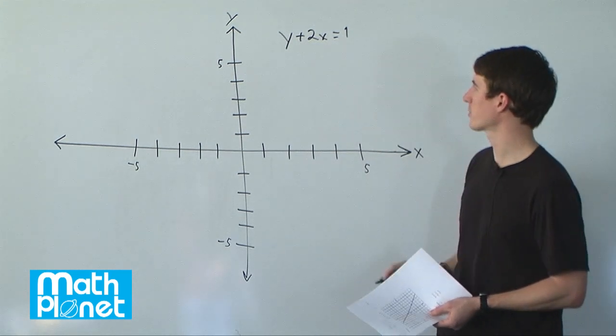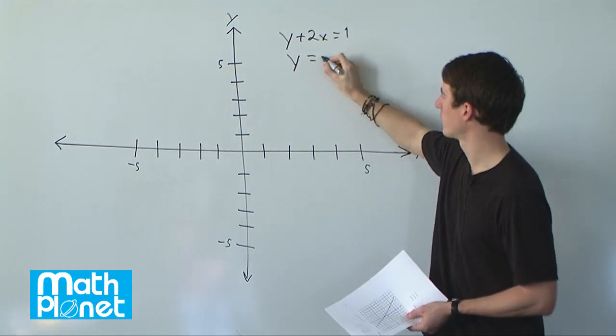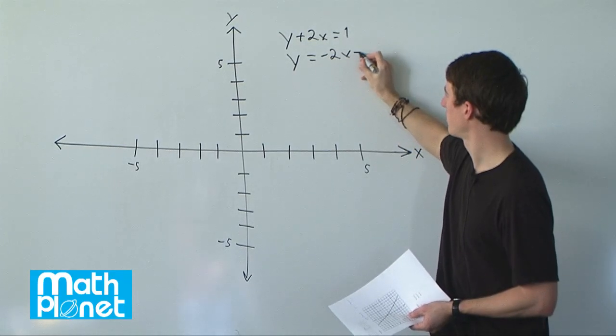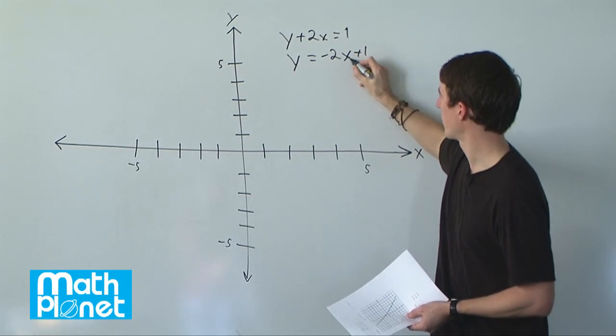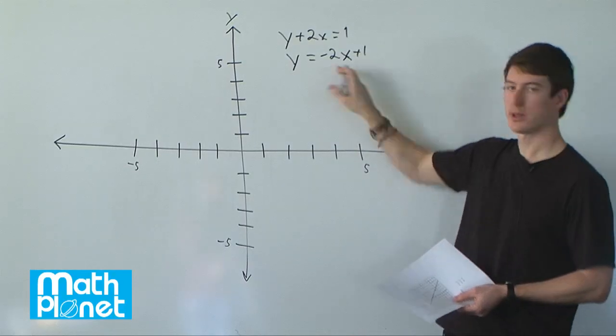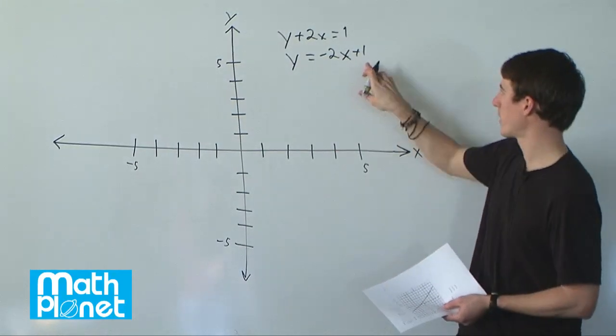Subtracting 2x from both sides gives us y equals negative 2x plus 1. So that's it, we have the slope is negative 2, and the y-intercept is 1.